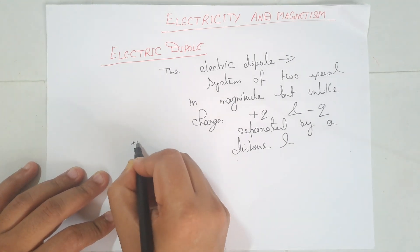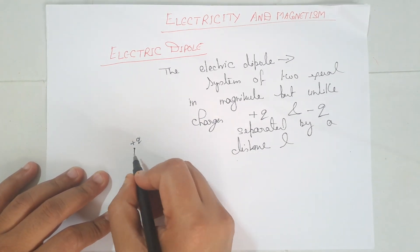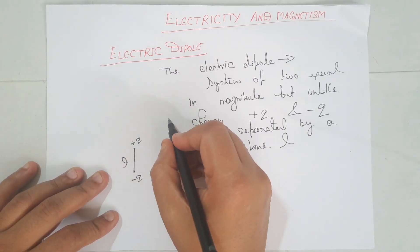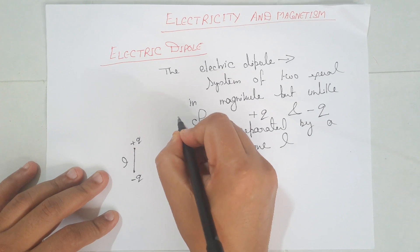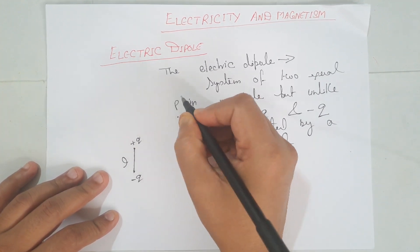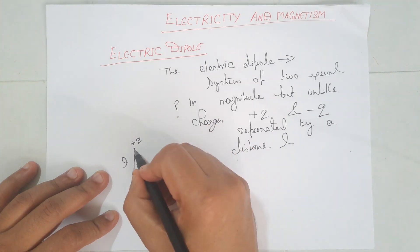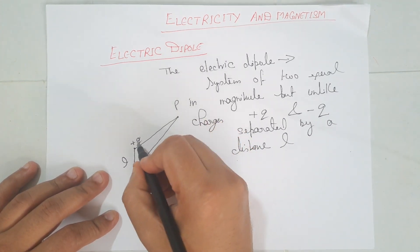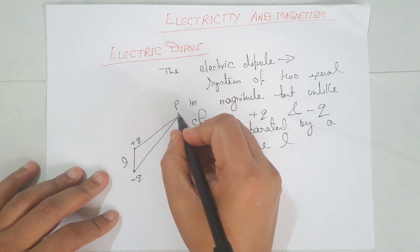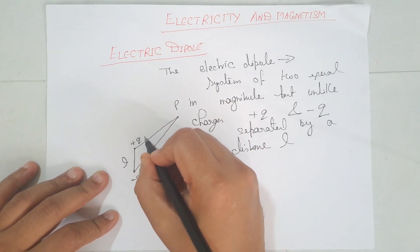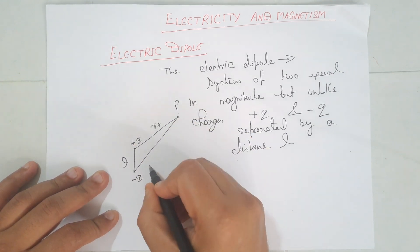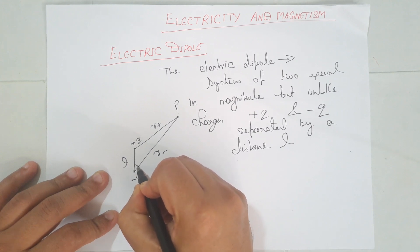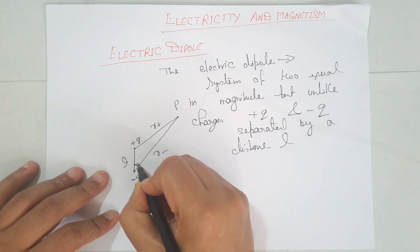We have charges minus Q and plus Q, with a separation of L between them. We have to calculate the potential due to this dipole at point P. The distance of P from the positive charge plus Q is R-plus, and the other distance is R-minus. The angle here is theta.